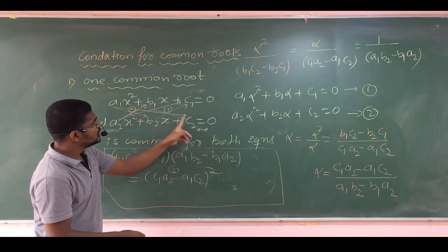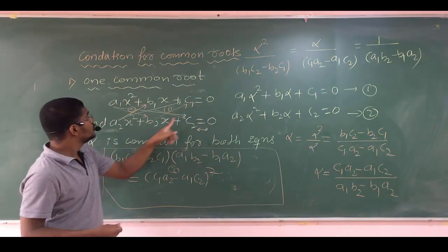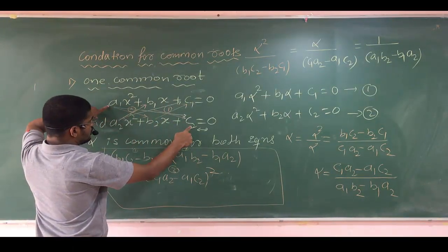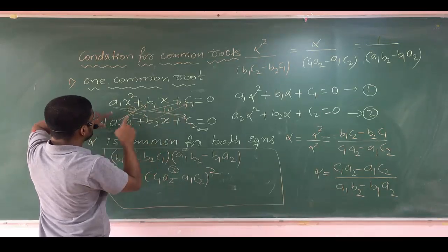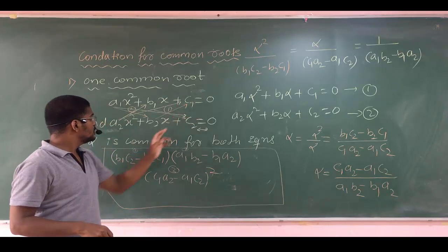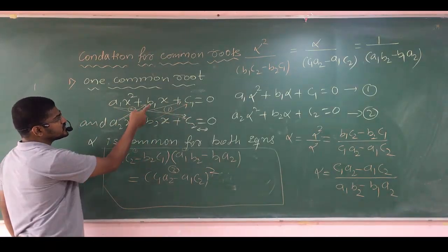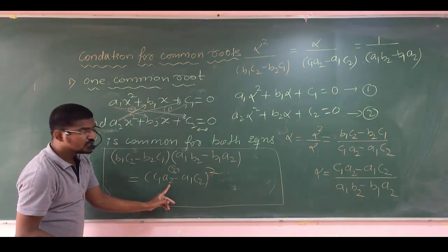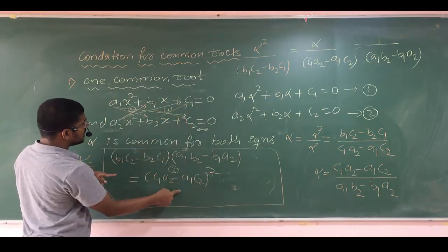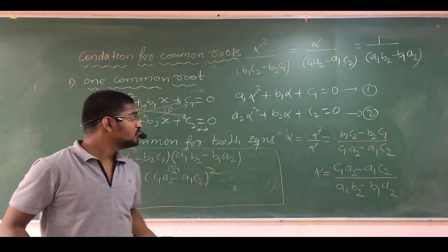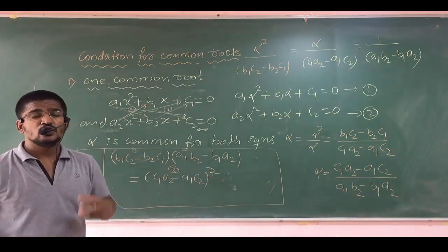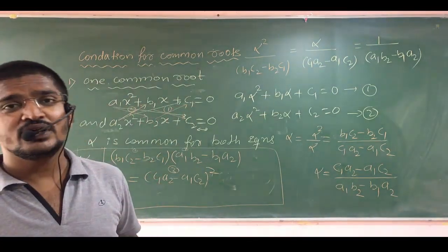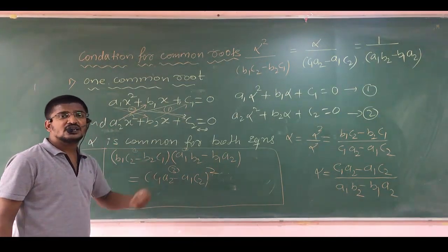To summarize the three terms: first is (b1c2 − b2c1), second is (a1b2 − a2b1), and the third starts with a2c1 − a1c2 whole squared. If you change the sign in the squared term it doesn't matter because it's squared. Remember this technique to solve common root problems very quickly.